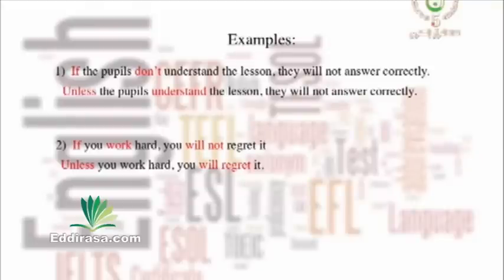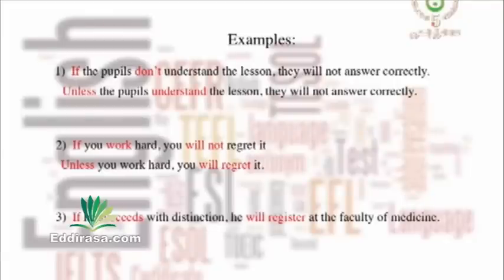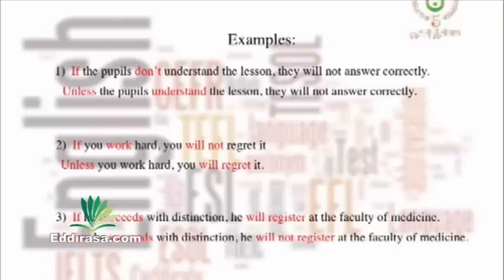For the last example: if he succeeds with distinction, he will register at the Faculty of Medicine. Both parts are affirmative, so the transformation gives: unless he succeeds with distinction, he will not register at the Faculty of Medicine. Is it clear? Let's move to the practice now.